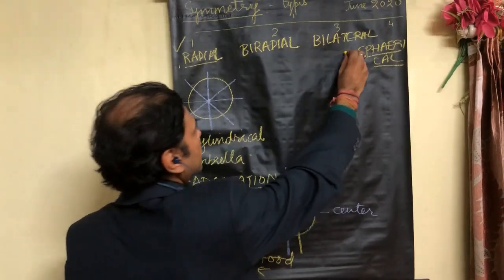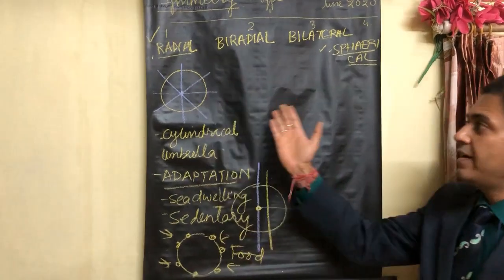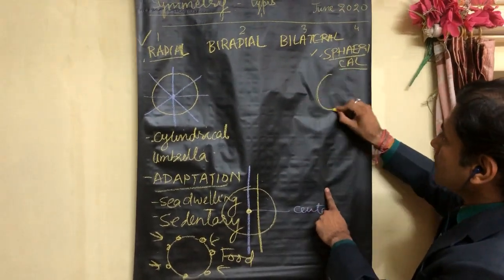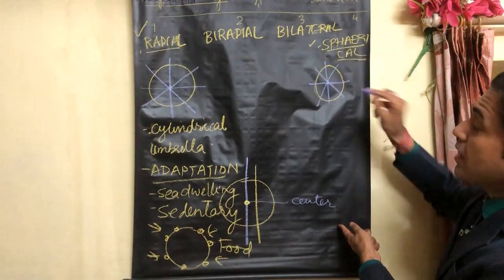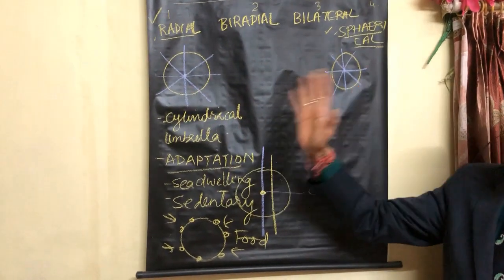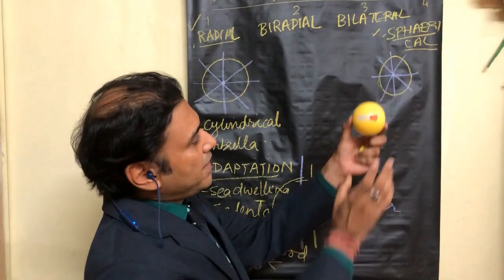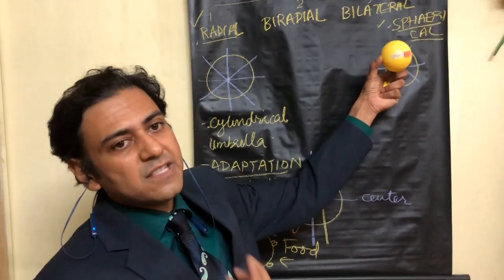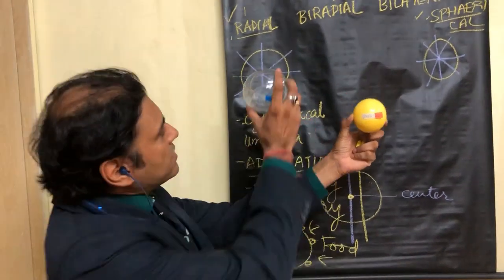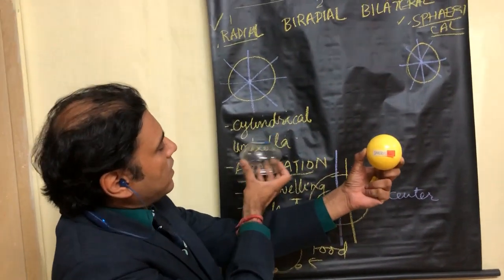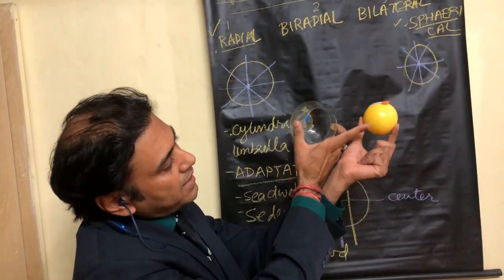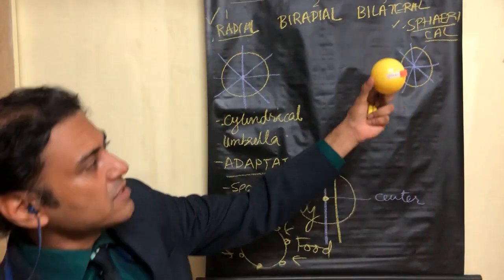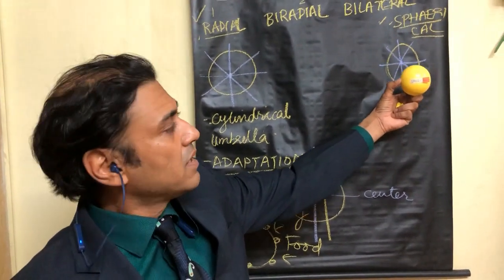When we go to spherical symmetry, it is similar to radial symmetry in that any plane passing through the center of the body will divide it into equal parts. The difference is that in spherical symmetry the organism is in the form of a sphere, whereas in radial symmetry the organism is cylindrical or umbrella-shaped. Any plane through the center of a spherical organism will divide it into equal parts.